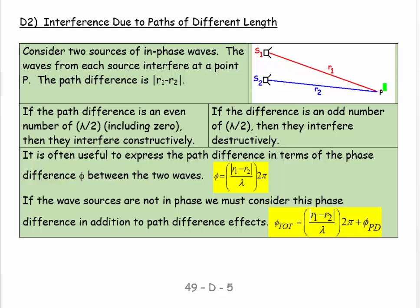Consider two sources of in-phase waves. The waves from each source interfere at point P and the path difference is simply r₁ minus r₂, the long one minus the short one. If the path difference is an even number of half wavelengths including zero, then we get constructive interference. If the path difference is an odd number of half wavelengths, then we get destructive interference.